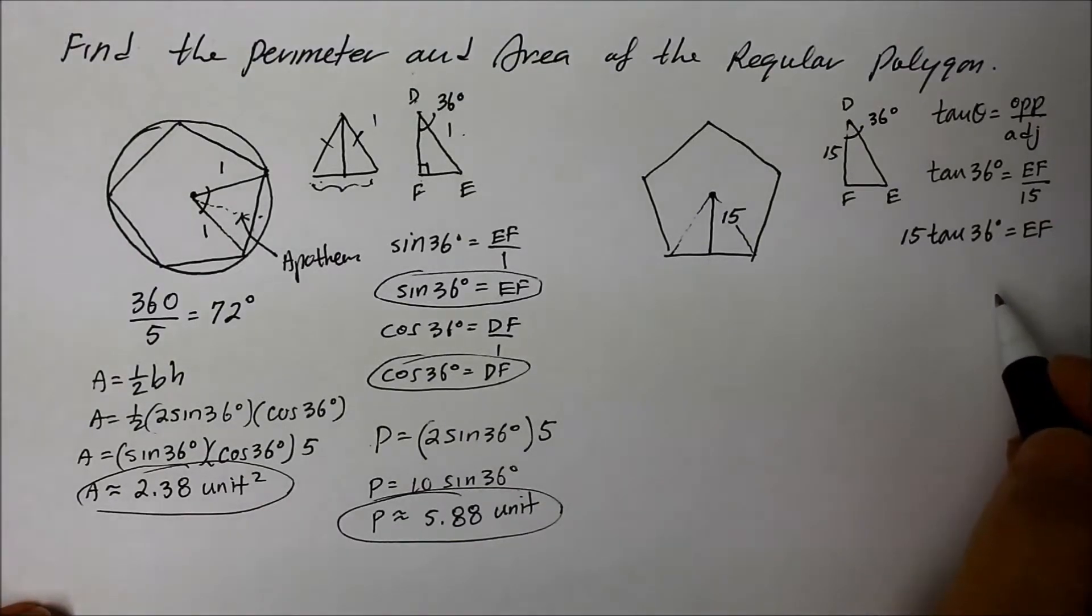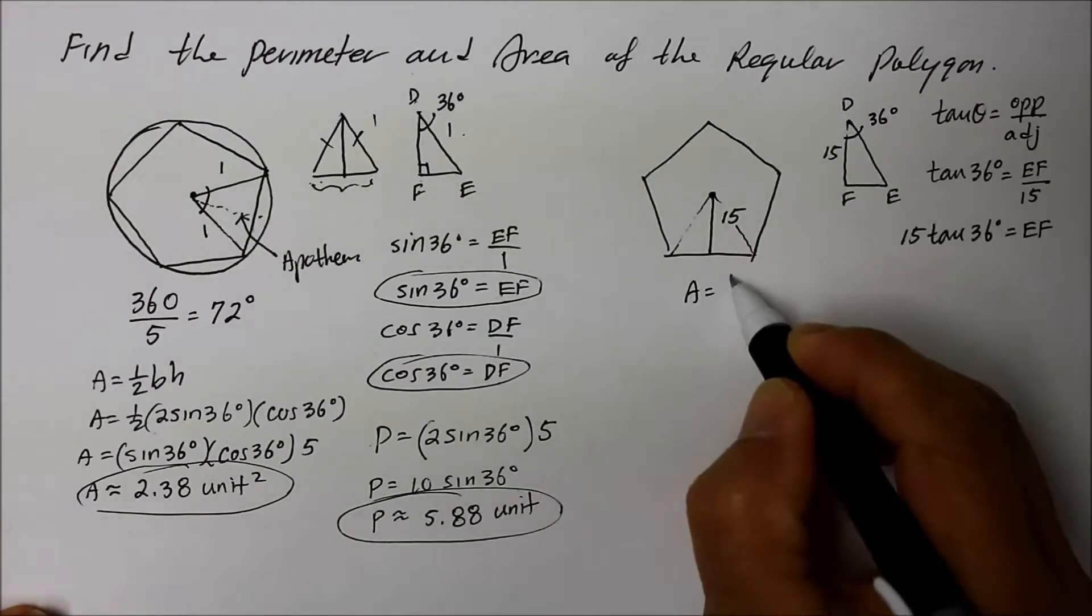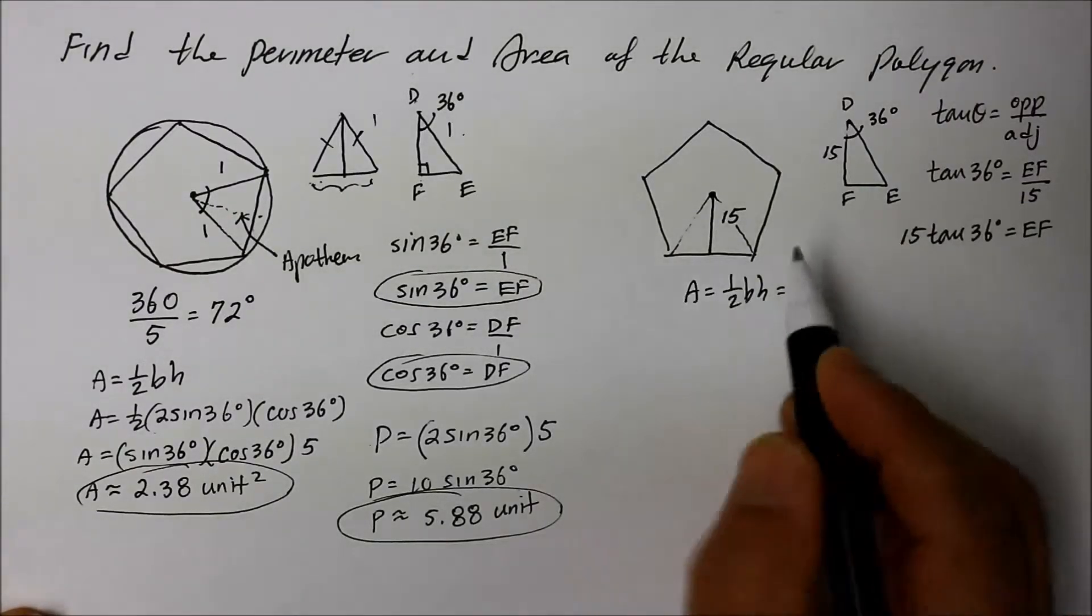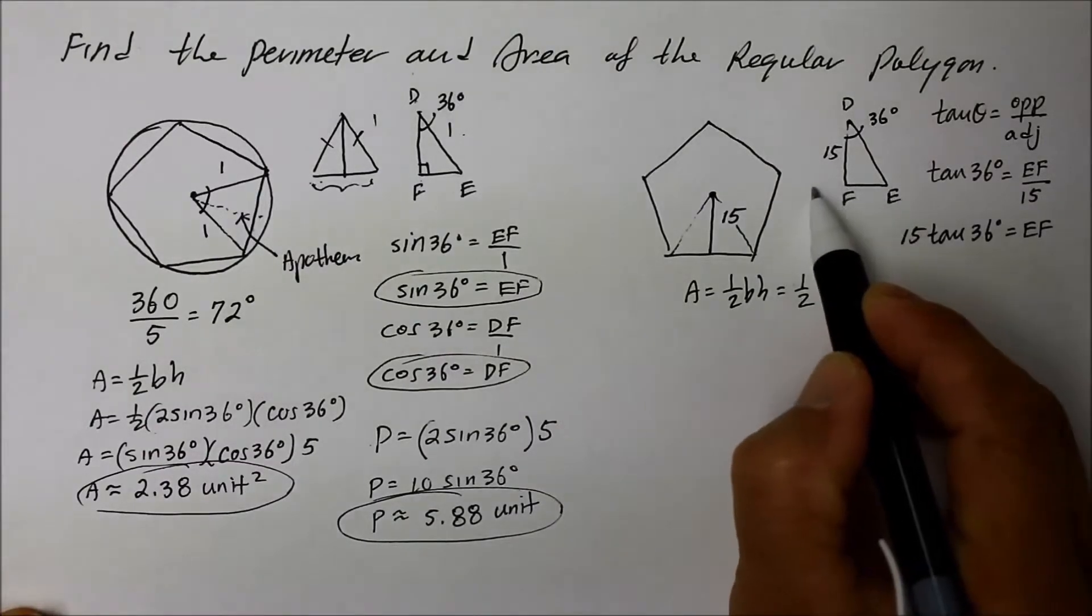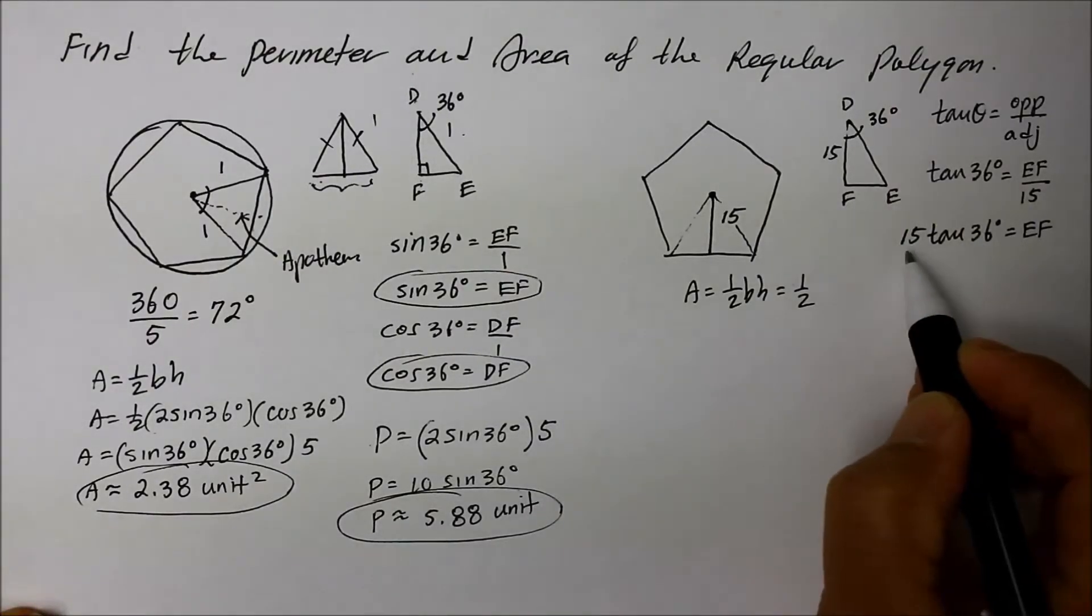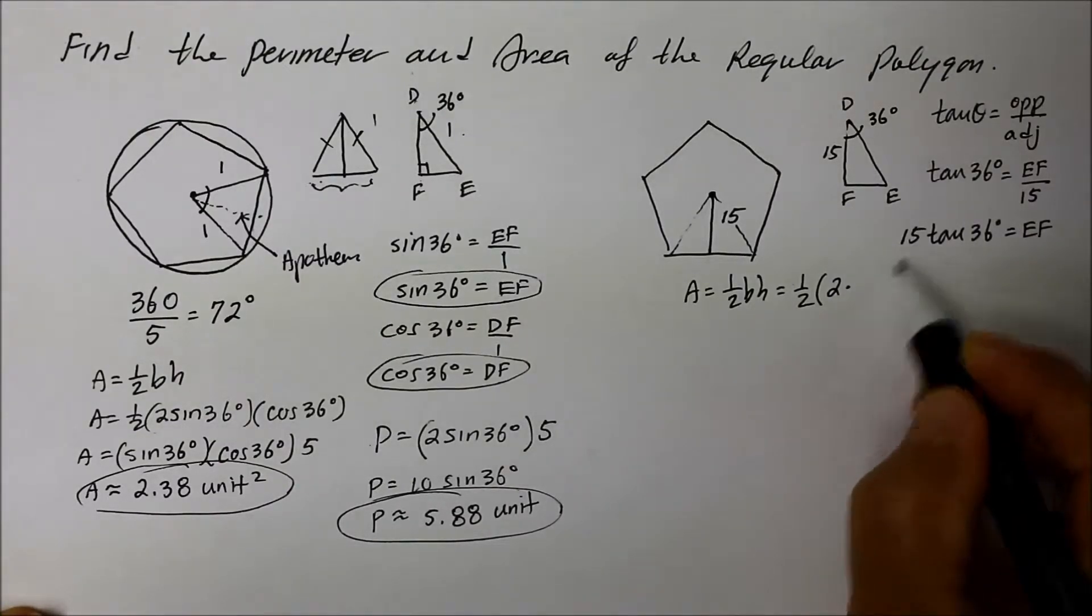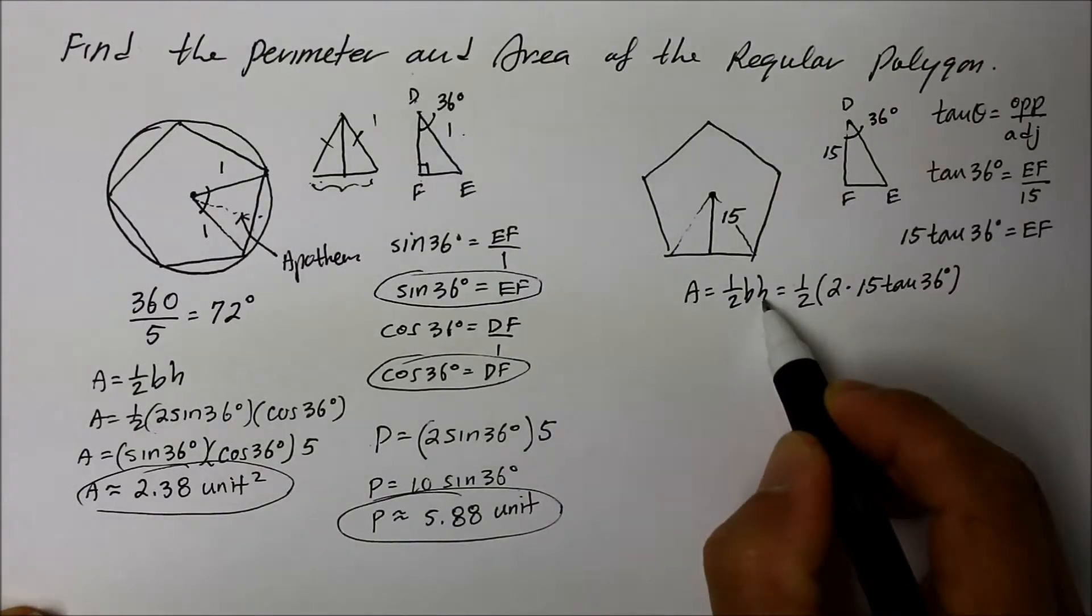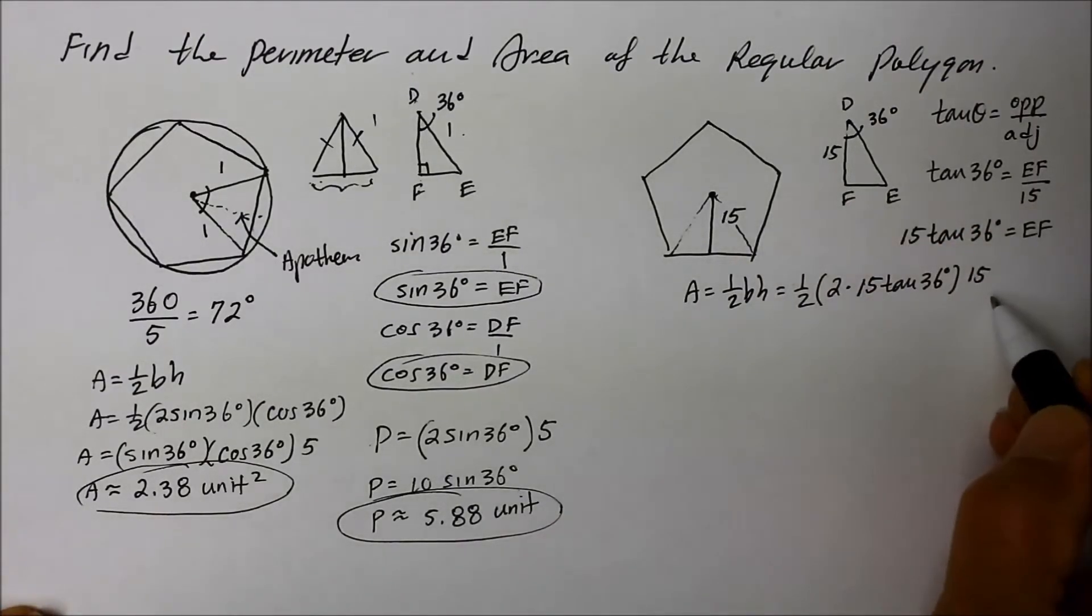And I think that's about all we need to find the area of a triangle, because area of a triangle is 1/2 base times height. So there's that 1/2. Now the base of this whole isosceles triangle is double whatever this is. So whatever this is, which is EF, we have to multiply by 2. And so we say 2 times that 15 tan 36 degrees, and the height is the apothem and the height is given as 15.